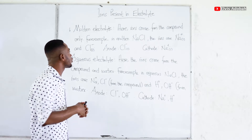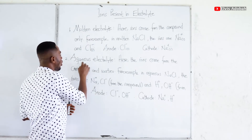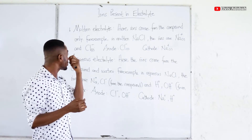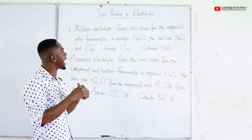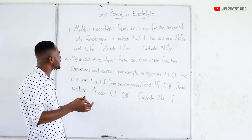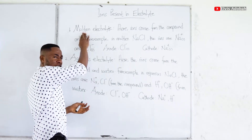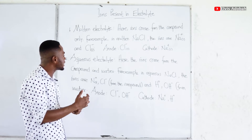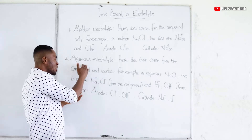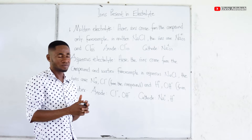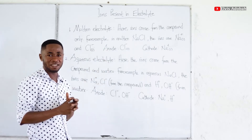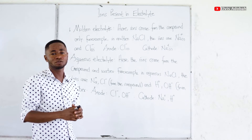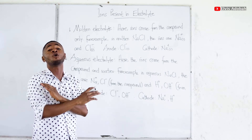In the definition we said it could either be molten or in an aqueous solution. So we want to look at the ions that are normally present in an electrolyte in case it is made of a molten substance, and the ions that are present in an electrolyte in case it is made of an aqueous solution. Let's look at the molten electrolyte. Here the ions that are present in the compound are the only ions involved.